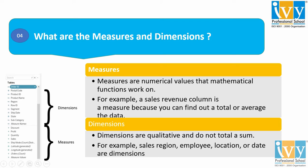For example, as you can see here, discount, profit, quantity, and sales — all these columns are basically the ones on which we can perform mathematical functions. Whereas dimensions are qualitative in nature and we cannot perform mathematical functions on them. For example, employee, location, and sales region — these are all examples of dimensions.